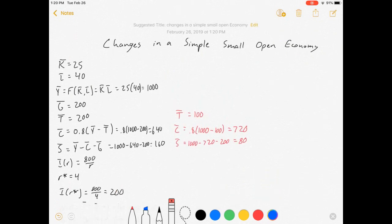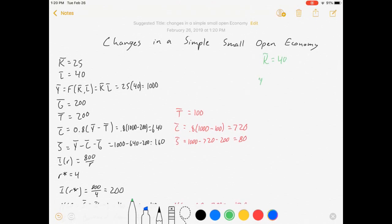Next change, let's do in green. Let's say instead that we change the capital stock. We'll make it be 40. It doesn't change L, but it does change Y. Equals 40 times 40, equals 1600.